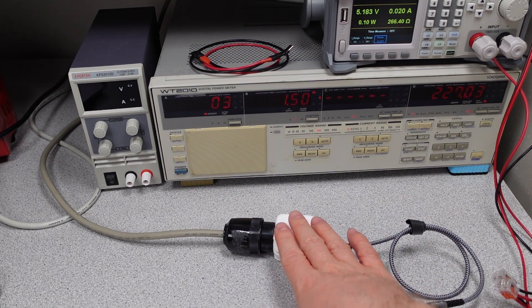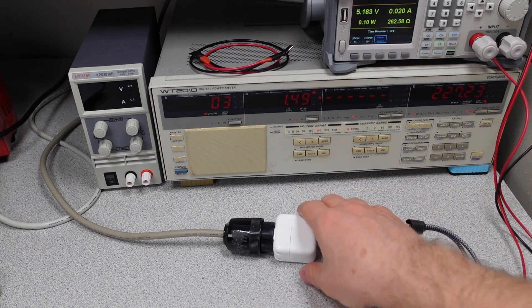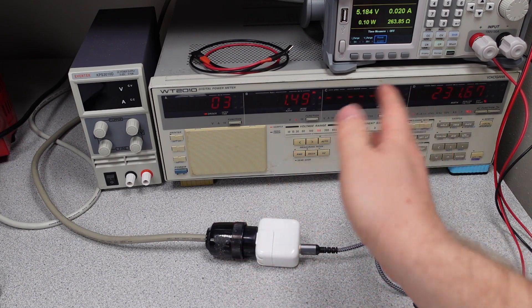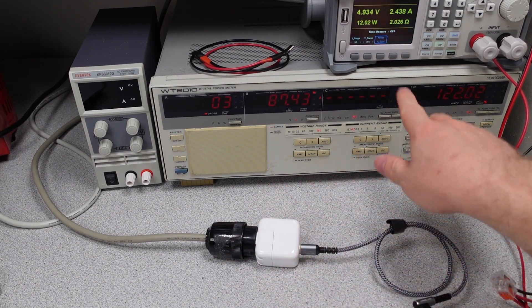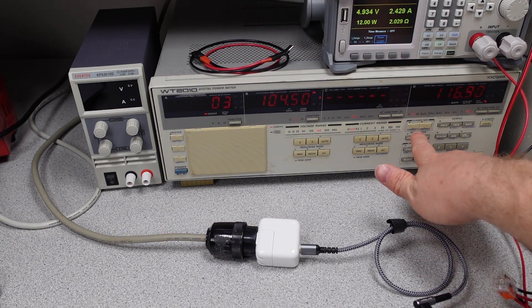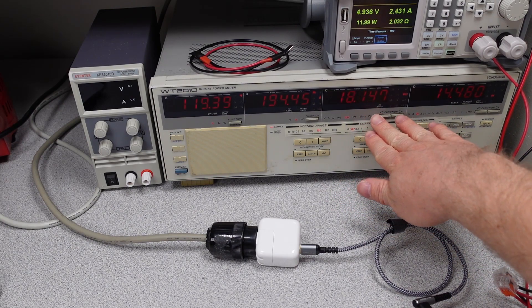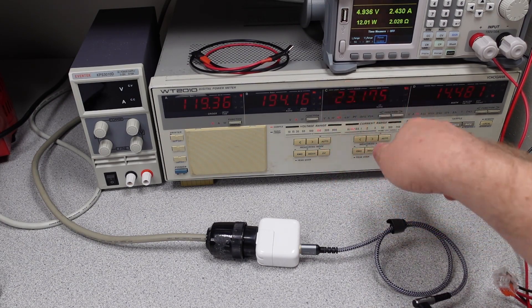So again, kind of like the last Apple adapter, this is not what we want to see. And it means that we're going to have issues with this adapter basically right down through the range. Take it right to full load. You can see our THD didn't really come down that much, so that's not great. The power didn't look too bad. Power factor is what you'd expect out of an adapter this style. VA is going to be some number in between the two.